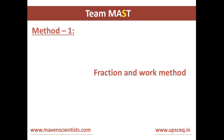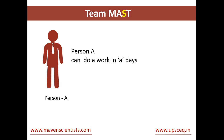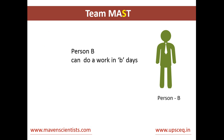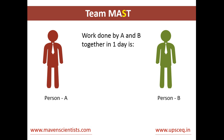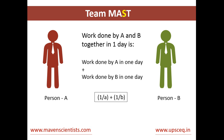The first method we will be using is the Fraction and Work method. Let's consider person A who can do a work in A days. So the work done by person A in 1 day will be equals to 1 divided by A. Similarly, a person B can do a work in B days, so the work done by B in 1 day will be 1 divided by B. If A and B together are working, the work done by them together in 1 day will be 1 divided by A plus 1 divided by B.